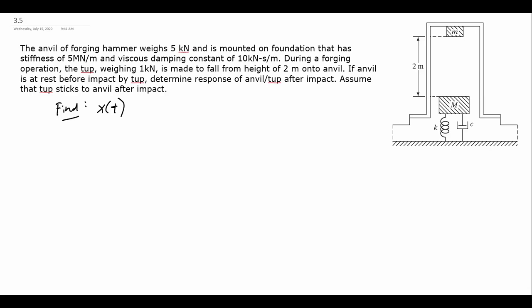We are given a lot of information here. We're told about the weight of the hammer, the weight of the anvil, the stiffness of the spring that the anvil sits on, and the stiffness of the damper as well — and that's going to go into our modeling step. In order to get x of t, we're going to need an equation of motion and solve it using our initial conditions, following the same procedure as for undamped problems, but now with damping.